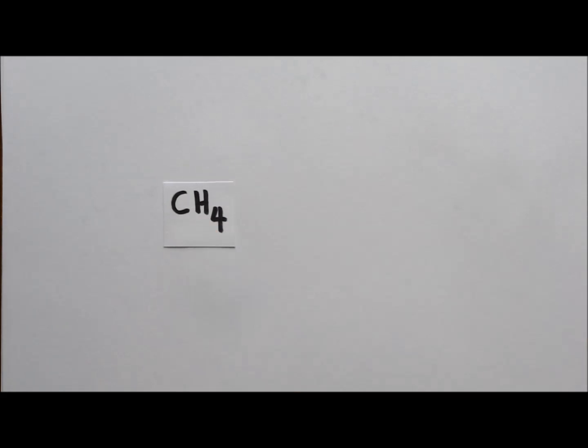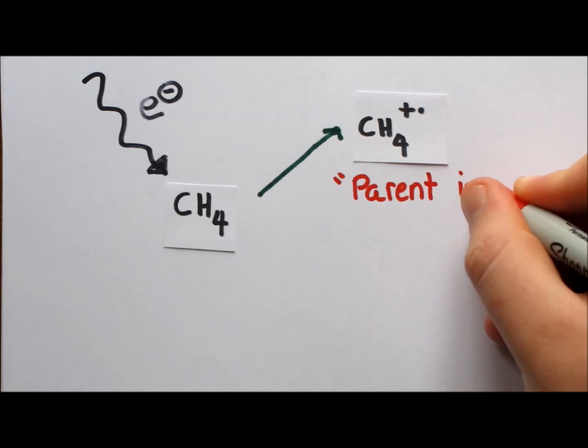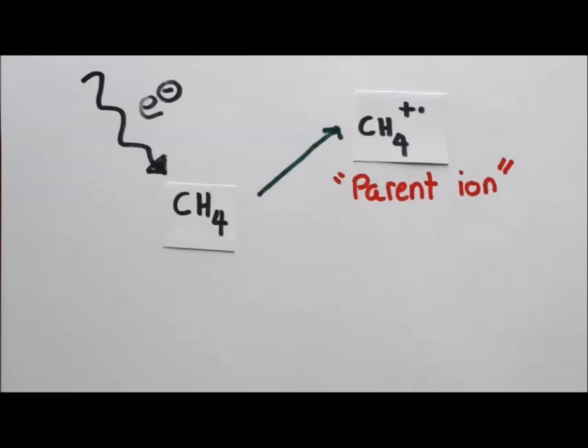Let's take methane as an example. As an electron collides with the molecule, a single electron could be knocked off and form the CH4 plus radical. This is called the parent ion, as it is simply the ionized form of the compound you are analyzing.